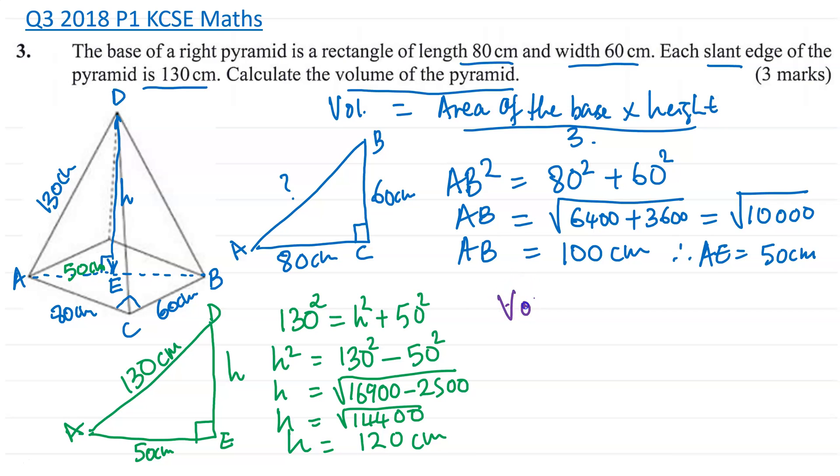So volume is going to be equal to area of the base. So area is just going to be 80 times 60. So 80 times 60 times the height, the vertical height, which we just calculated, 120 centimeters. Everything divided by 3.